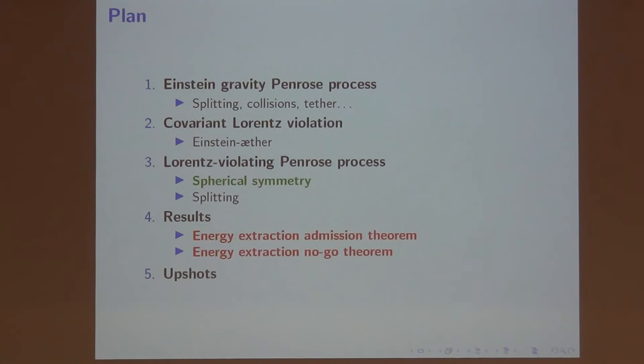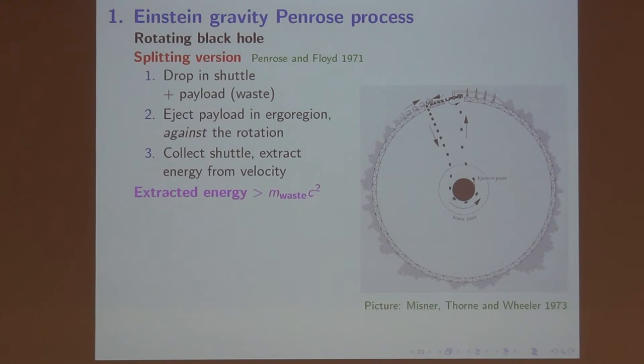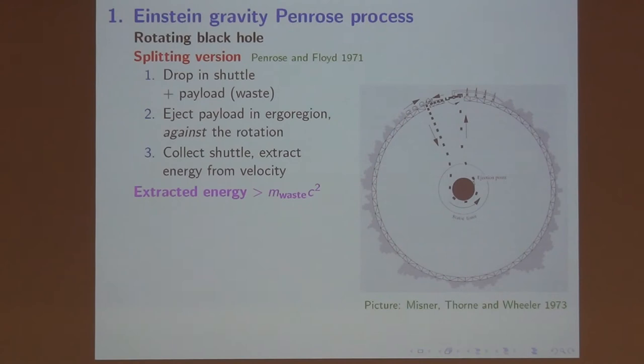Okay, so let's recall how energy extraction from black holes works in Einstein gravity. Here is a picture from a book that we know and as we learned from Ted Newman on Monday, we have strong feelings about this book. So, the basic scenario is here. So, the collision version, the splitting version of a Penrose process goes back to the paper over here. You drop a shuttle with payload near a Kerr black hole. There is the ergo region, the region where the killing vector that's time-like at infinity goes space-like. Then you eject your payload. You eject the payload against the rotation. This gives your spaceship a kick and it comes faster as you can see over here.